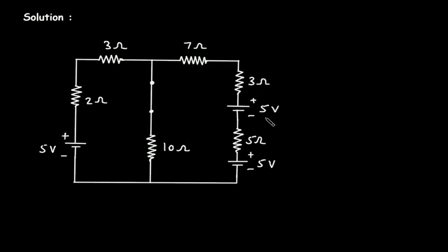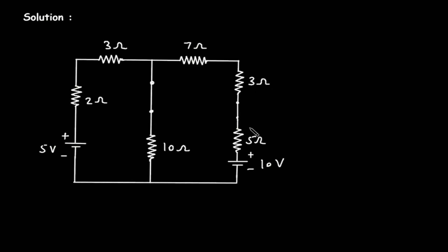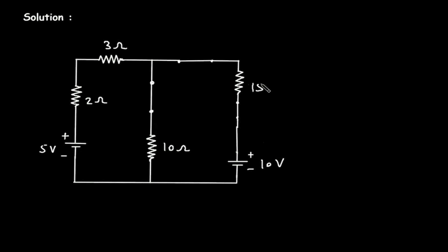Here we can see this 5 Volt and this 5 Volt are connected in series, so their total will be 10 Volt. We can remove this voltage source and replace it with 10 Volt. Also, this 7 Ohm, 3 Ohm and 5 Ohm are connected in series, so their equivalent resistance will be 7 plus 3 is 10, plus 5 is 15 Ohm.